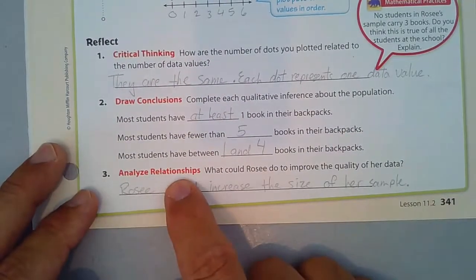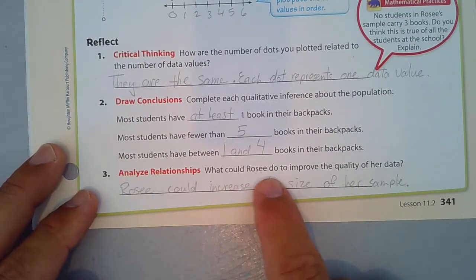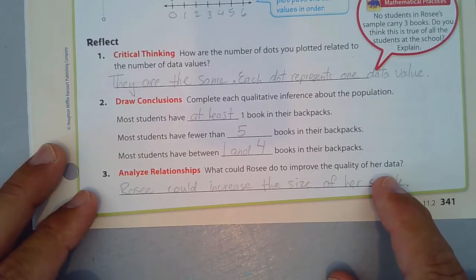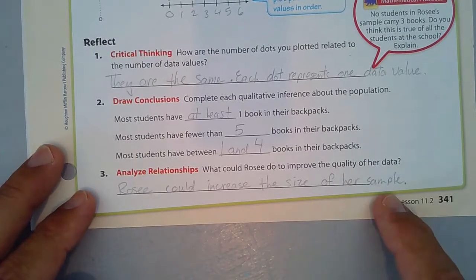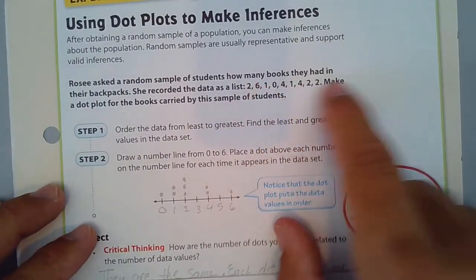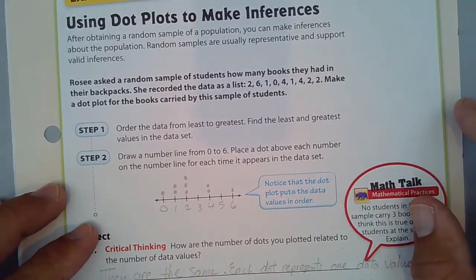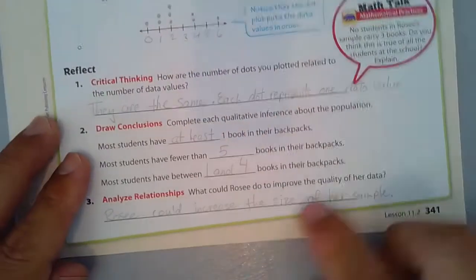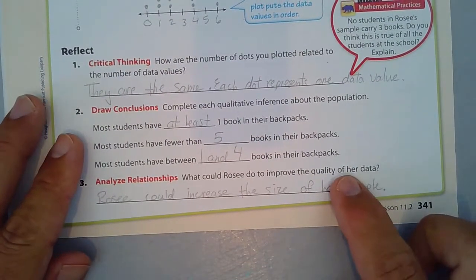Let's analyze the relationship. What could Rosie do to improve the quality of her data? Well, she can increase the size of her sample, which is to ask more students to get more data. More students, how many books do you have in your bag? That would improve the quality of her data. It would make it more valuable.